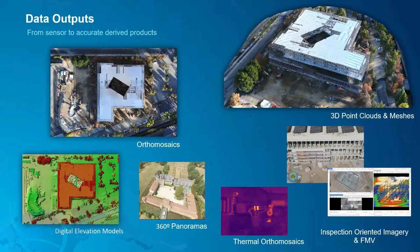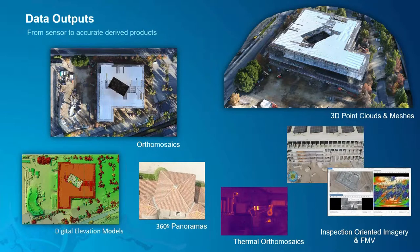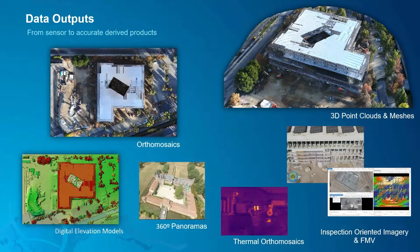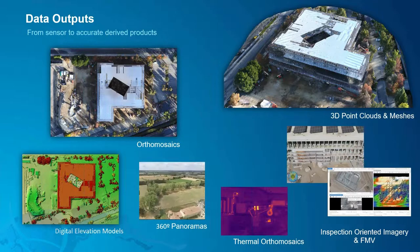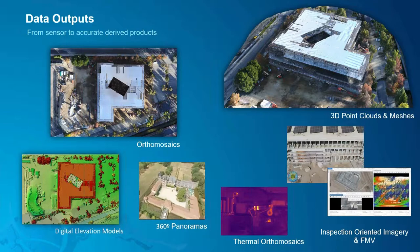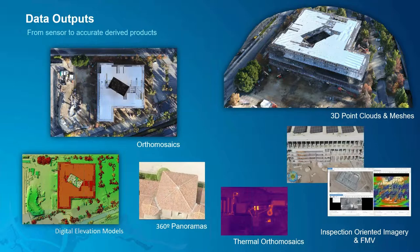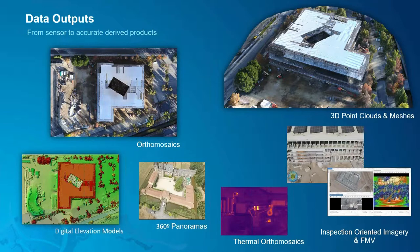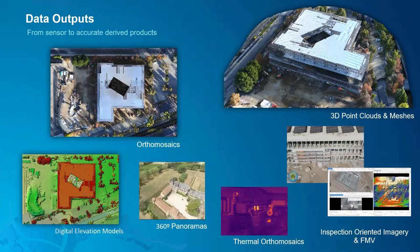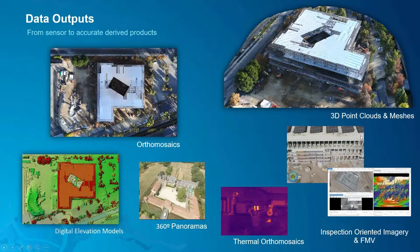SiteScan for ArcGIS delivers accurate 2D, 2.5D, and 3D data outputs to meet your diverse needs. These outputs include orthomosaics, digital elevation models, 3D point clouds and meshes, as well as oriented oblique imagery, thermal orthomosaics, and hybrid 360 panoramic photos. For this webinar, Aaron will be showing examples of orthomosaics, digital elevation models, and 3D point clouds and meshes. So right now, Aaron, let's start to demonstrate the entire end-to-end workflow.